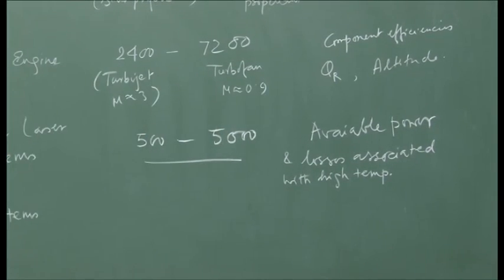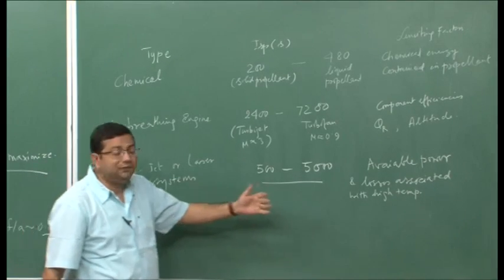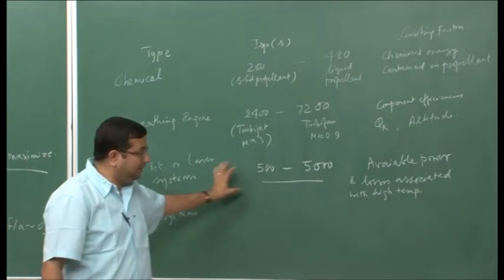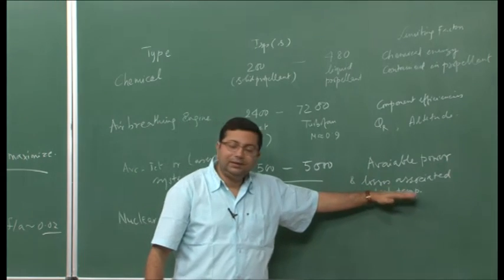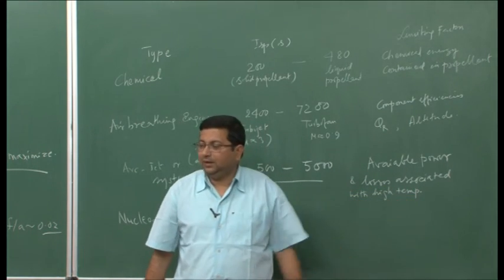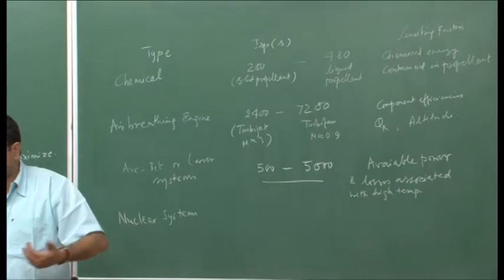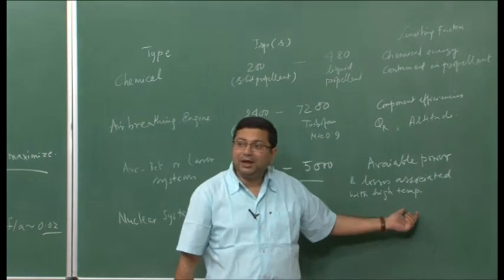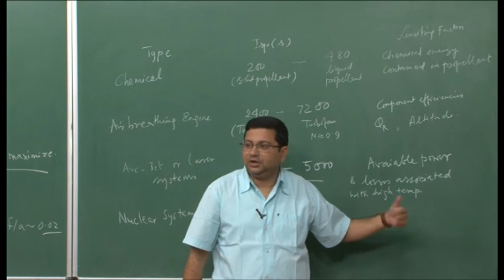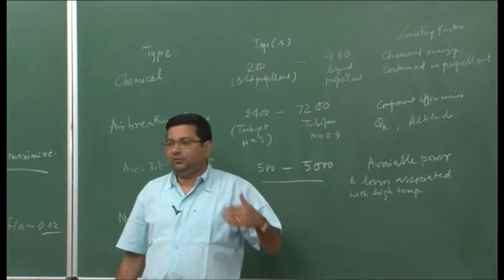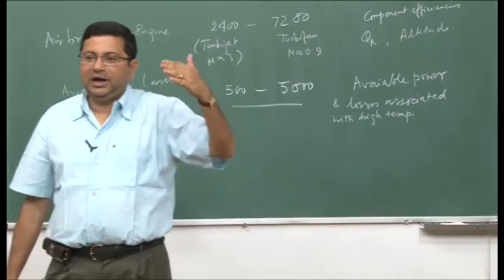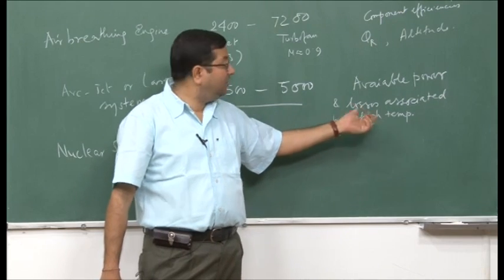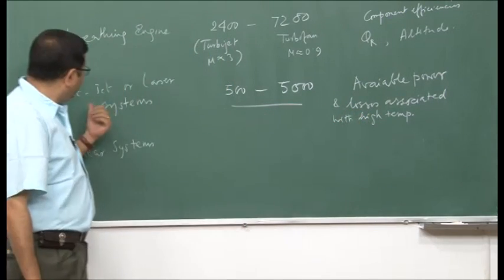For example, the arc jet requires very high voltage, and in order to produce that high voltage you require very high power — that is a limiting factor. The arc can reach very high temperatures, up to about 12,000 to 13,000 Kelvin, and because of this high temperature there are losses associated with thermal flow from high-temperature to low-temperature regions. This is a limiting factor for these devices.